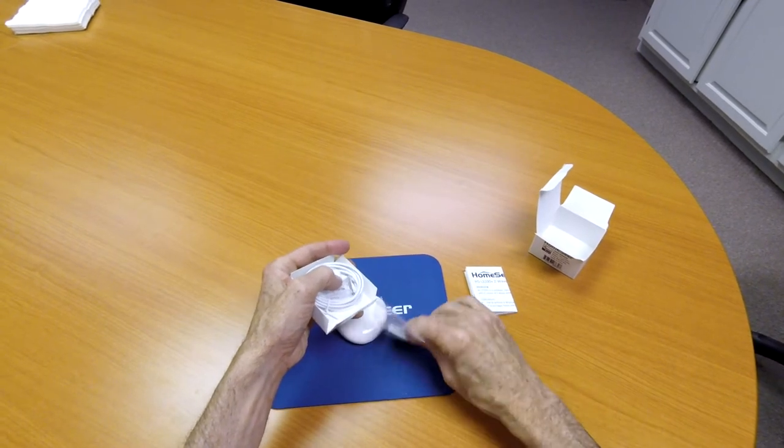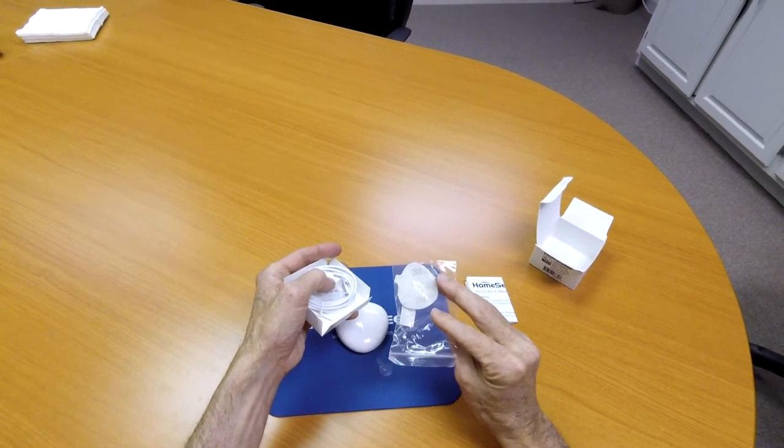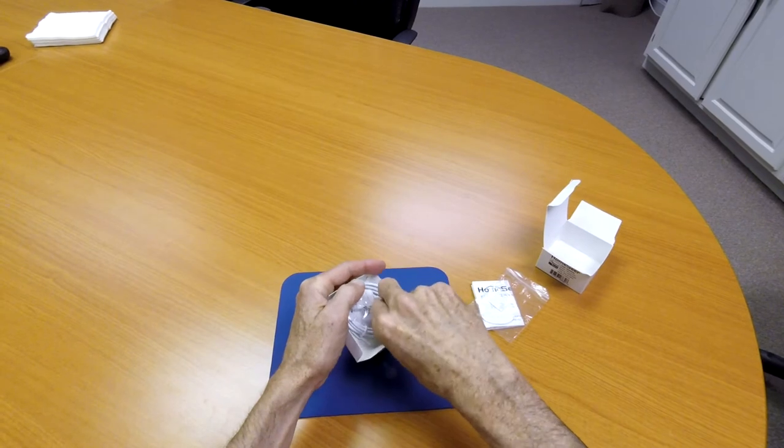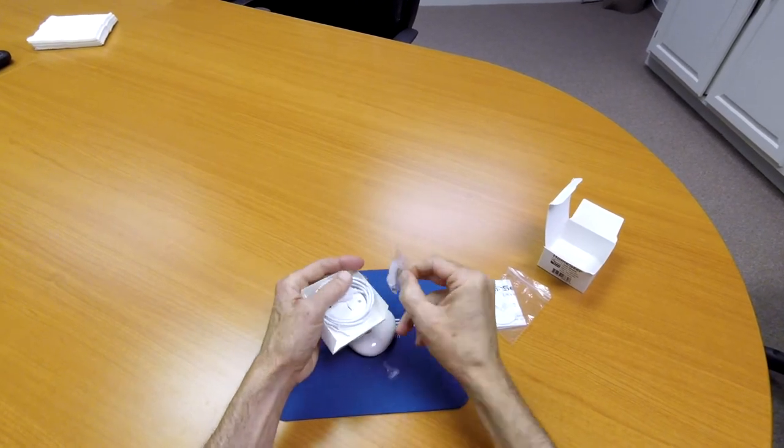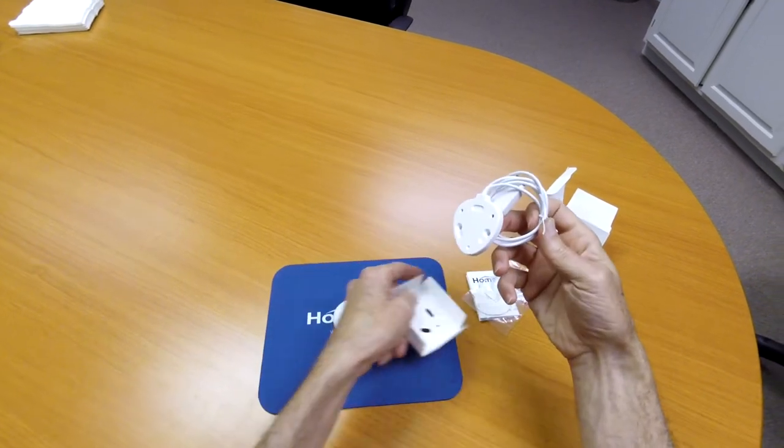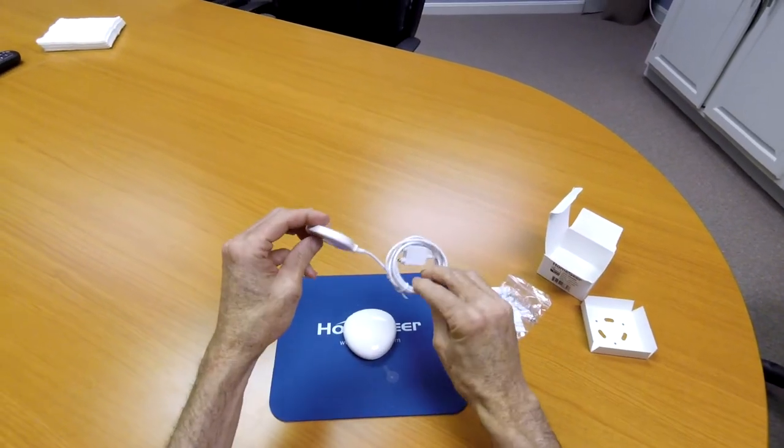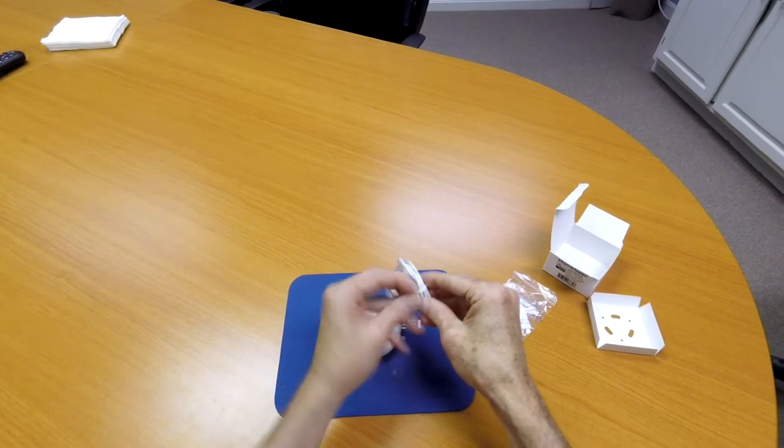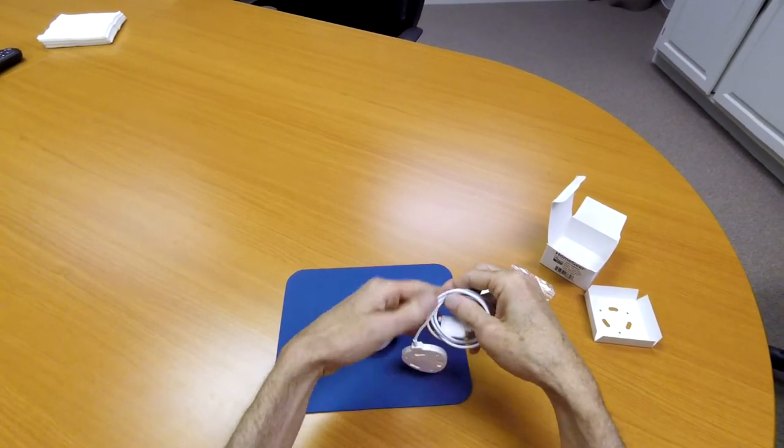Now inside the box you're going to find a manual, there is some double stick mounting tape, there are also a couple of mounting screws and plaster wall anchors, and you'll find a wall mount which is a magnetic mount that has a probe cable attached to it.